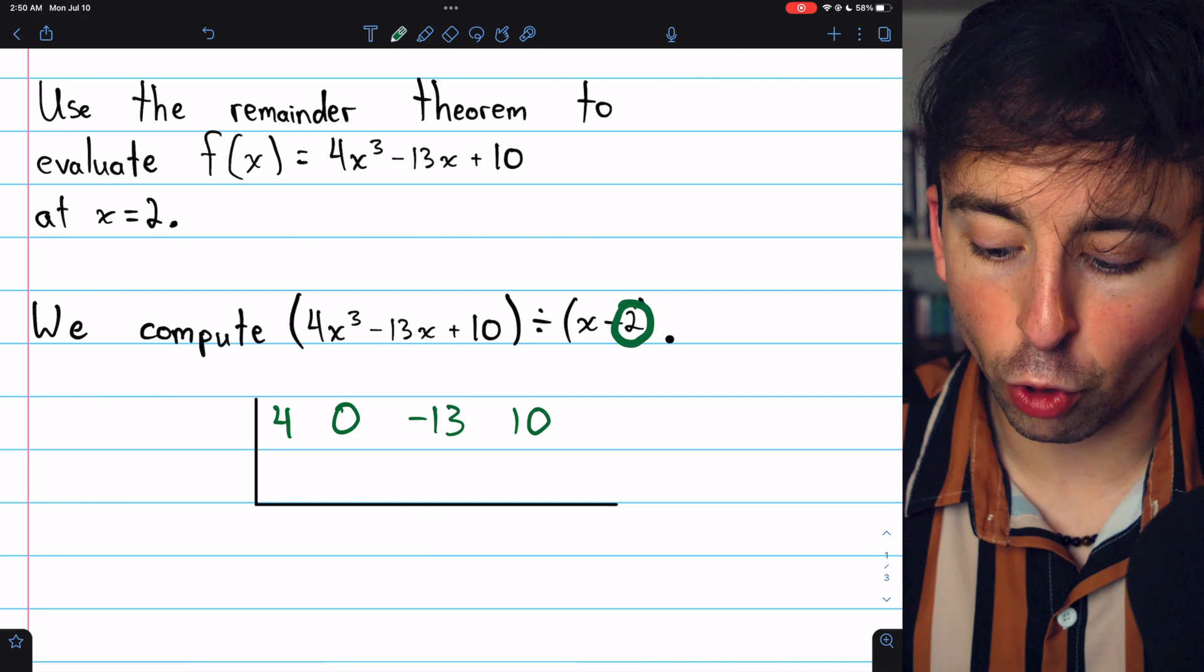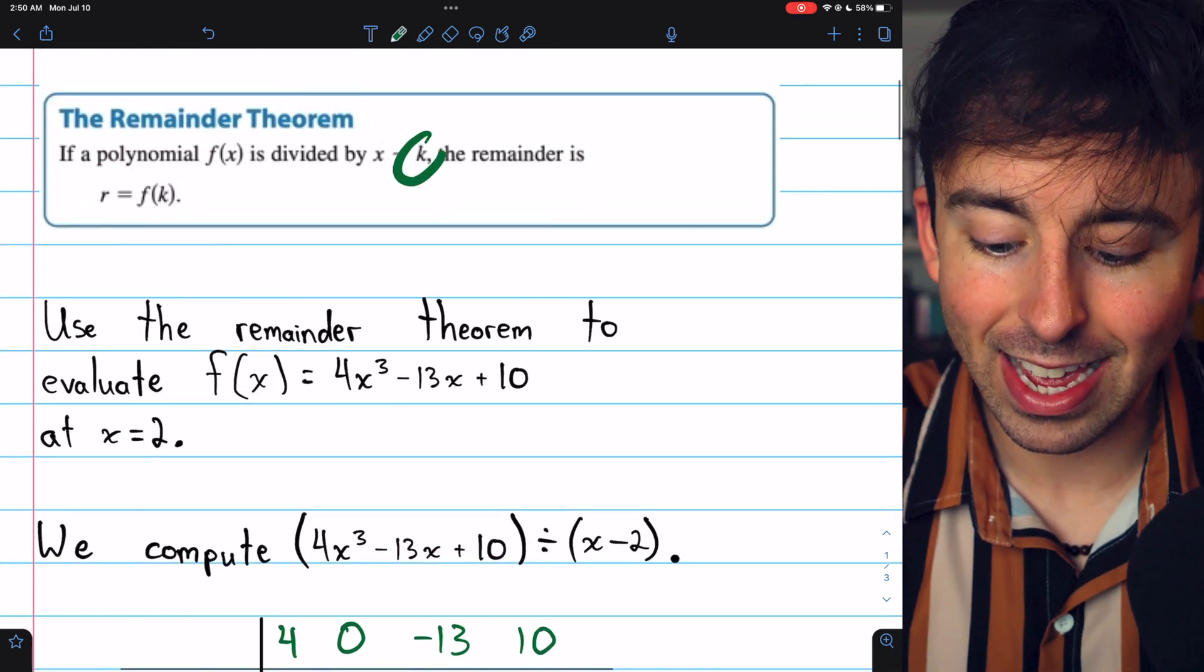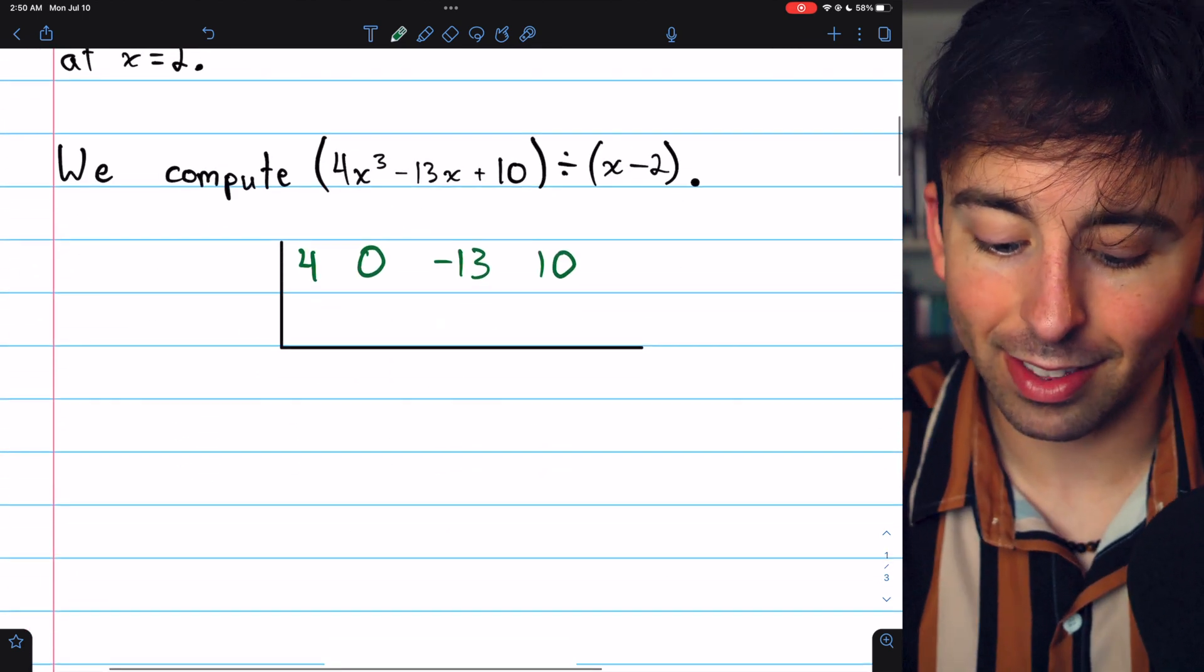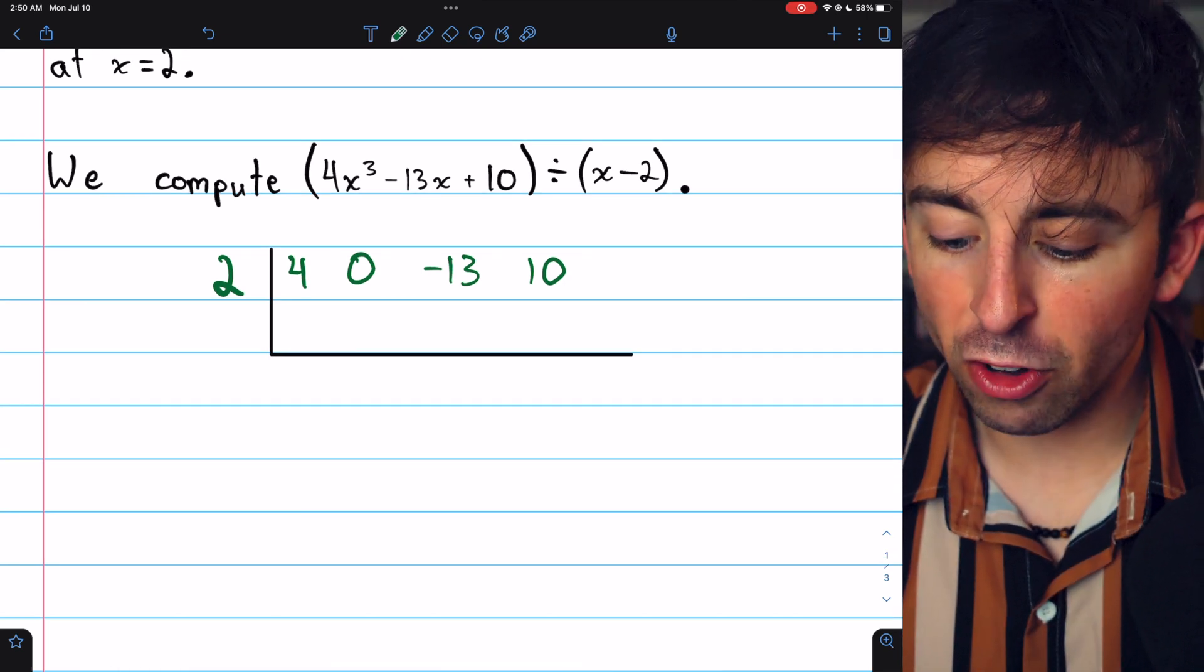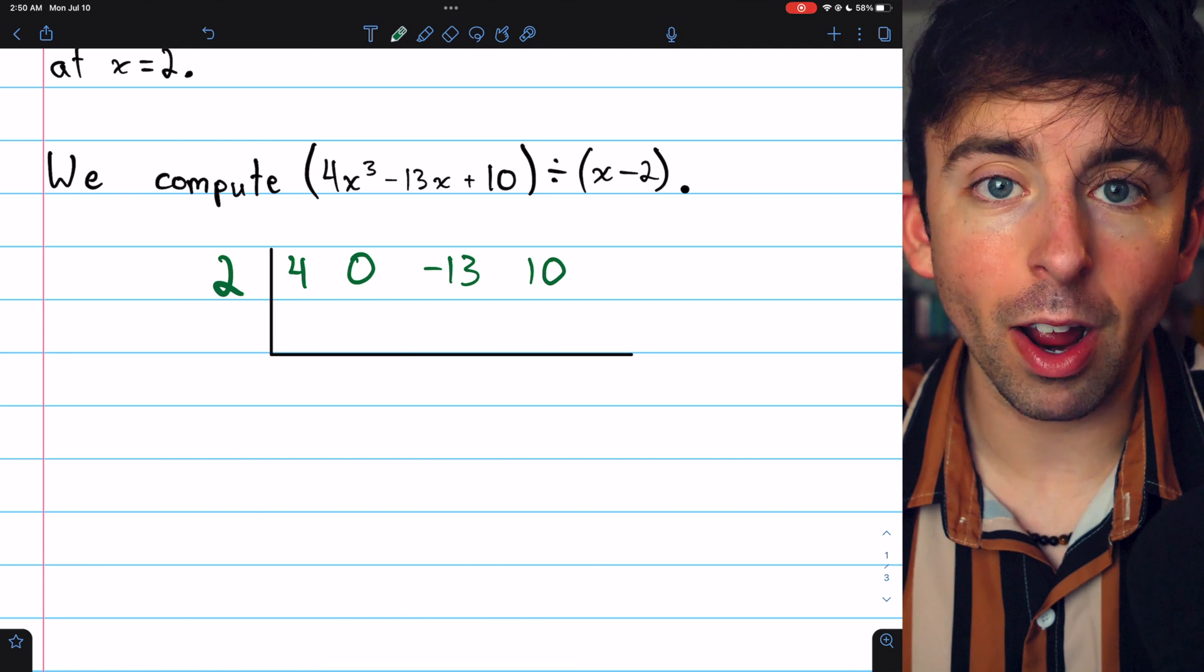Out front, we put the number being subtracted from x, that's the k value. In this case, that's 2. It's the point at which we're trying to evaluate the function.